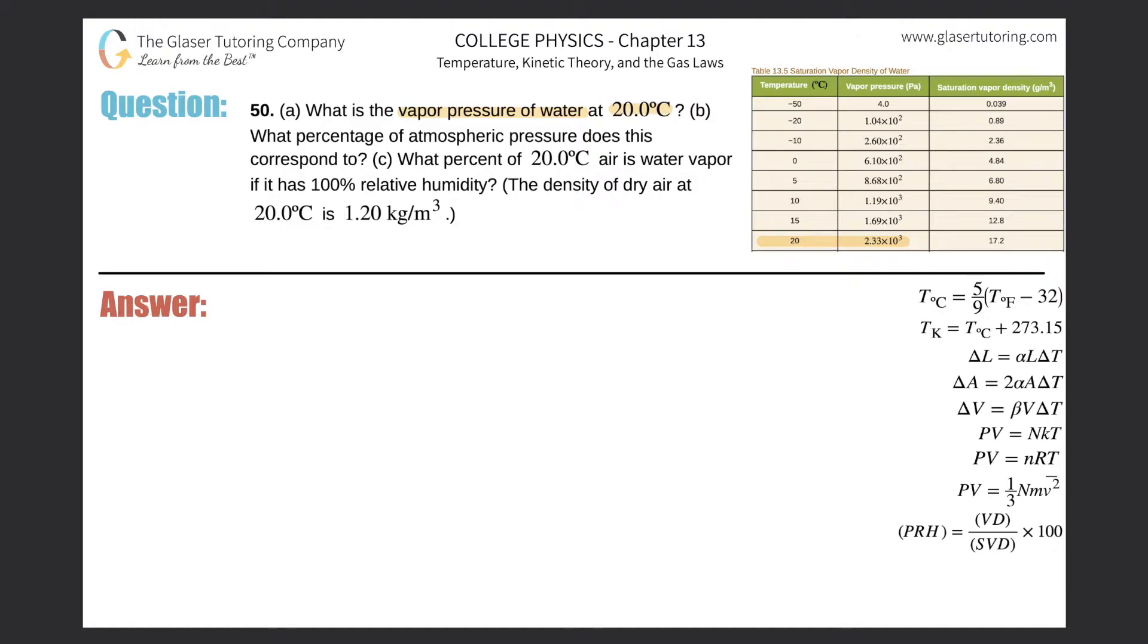Letter B: What percentage of atmospheric pressure does this correspond to? Remember basic percentages—anytime you're dealing with a percent, you're talking about the part divided by the whole times 100. We know the vapor pressure of water at 20 degrees Celsius is 2.33 times 10 to the third, roughly about 2000. The atmospheric pressure at sea level is about 1.01 times 10 to the fifth pascals, or roughly about 100,000.